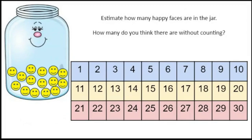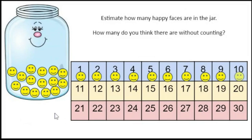My estimate is 11. But let's count them: 1, 2, 3, 4, 5, 6, 7, 8, 9, 10, 11, 12, 13, 14, 15. Wow, so I was close. I had 11 as an estimate, but they count as 15. Good job. Thanks for helping me.